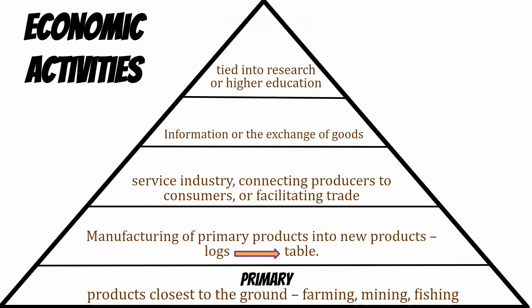If you're in the primary sector, you're probably a farmer, a fisherman, or a lumberjack. Above that is called secondary. This is where you take that raw material and turn it into a finished product — like taking a log and turning it into a table. That happens at a factory.